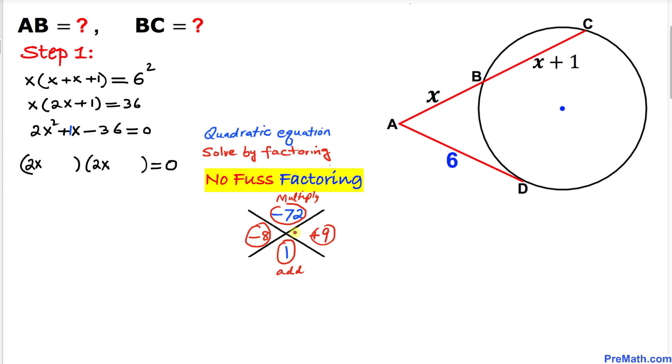Write these factors, negative 8 and positive 9, up here. In the first parentheses, 2 and 8 are both divisible by 2, so divide by 2. In the second parentheses, nothing is common between 2 and 9, so leave it alone. This becomes x minus 4 (8 divided by 2 is 4) and 2x plus 9 equals 0. Separate them: x minus 4 equals 0 and 2x plus 9 equals 0.